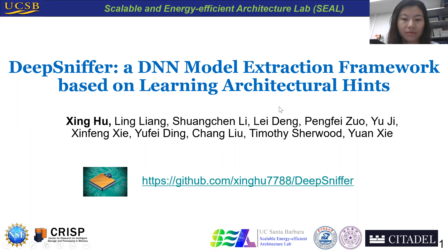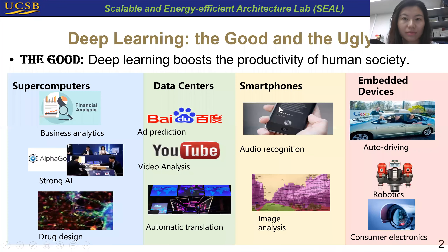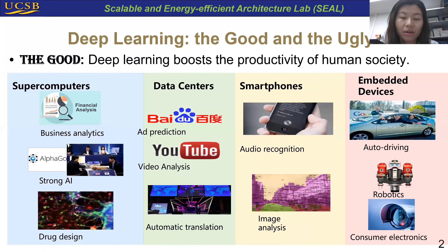Deep learning systems are widely adopted in many application scenarios, such as supercomputers, data centers, smartphones, and embedded devices, covering many important application domains such as computer vision, natural language processing, autonomous driving, and chip design, etc.